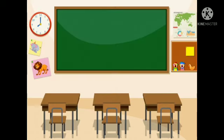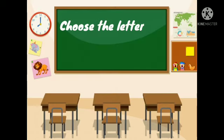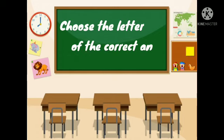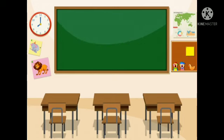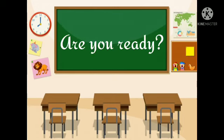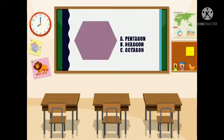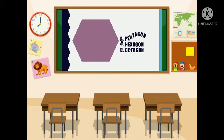Now, as a sort of review, identify the shapes by choosing the letter of the correct answer of the following shapes. Are you ready? Very good! Let's start! What shape is this? A pentagon, B hexagon, or C octagon? Correct! It's hexagon.